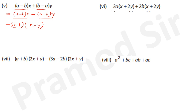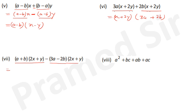Question 6: (x+2y) is matching, so take (x+2y) as common; what is left: (3a+2b). Question 7: a+b and 2x+y. Also 3a−2b and 2x+y. (2x+y) is matching, take it common; left: (a+b) and −(3a−2b).